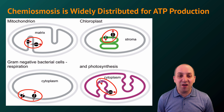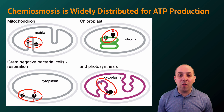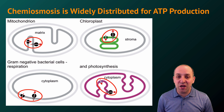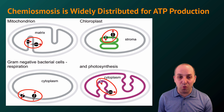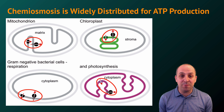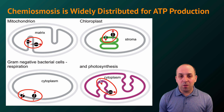All you need for chemiosmosis is a membrane, an electron transport chain, ATP synthase, and the ability to isolate protons on either side of the membrane — and you can produce ATP through chemiosmosis.